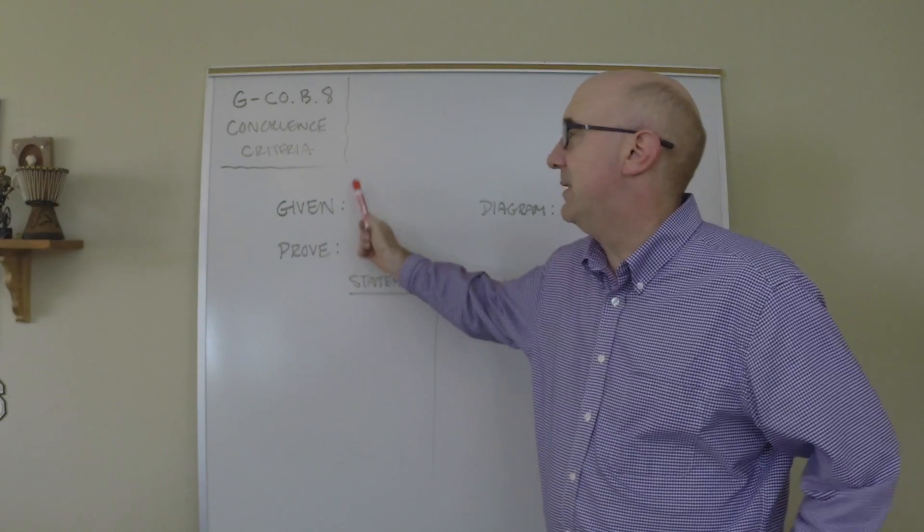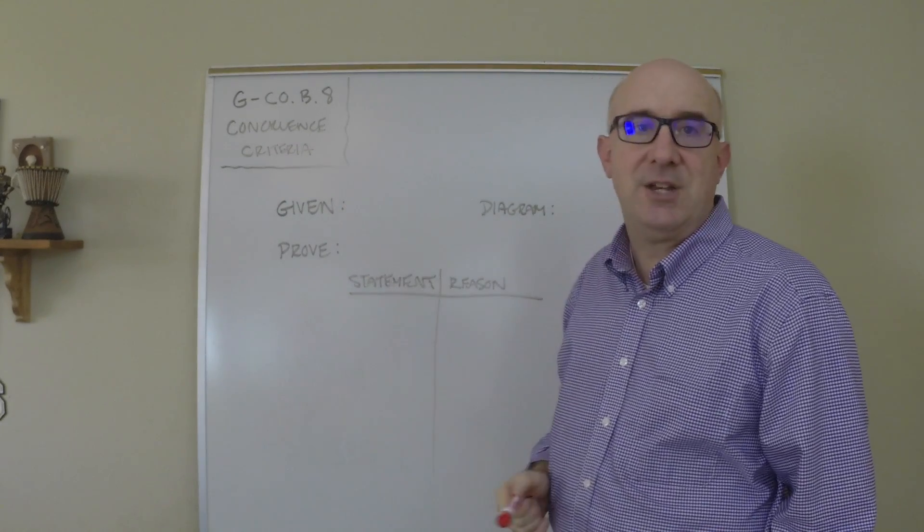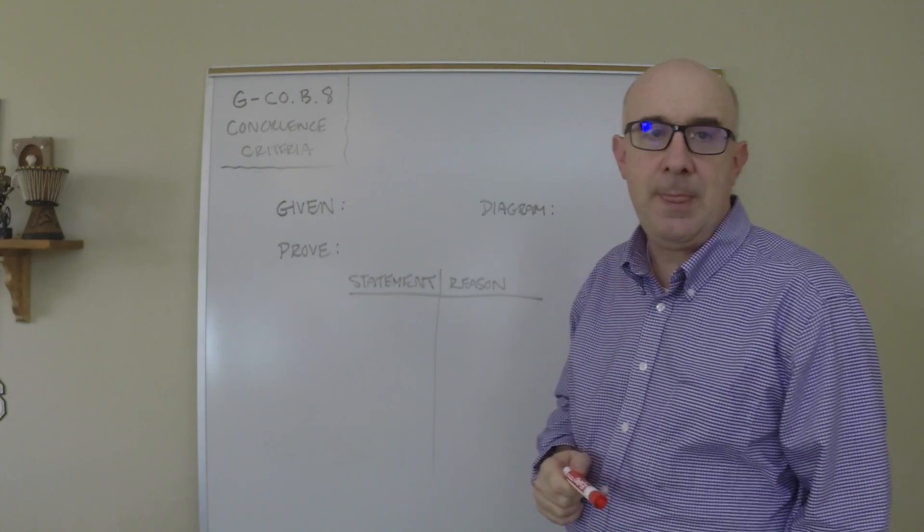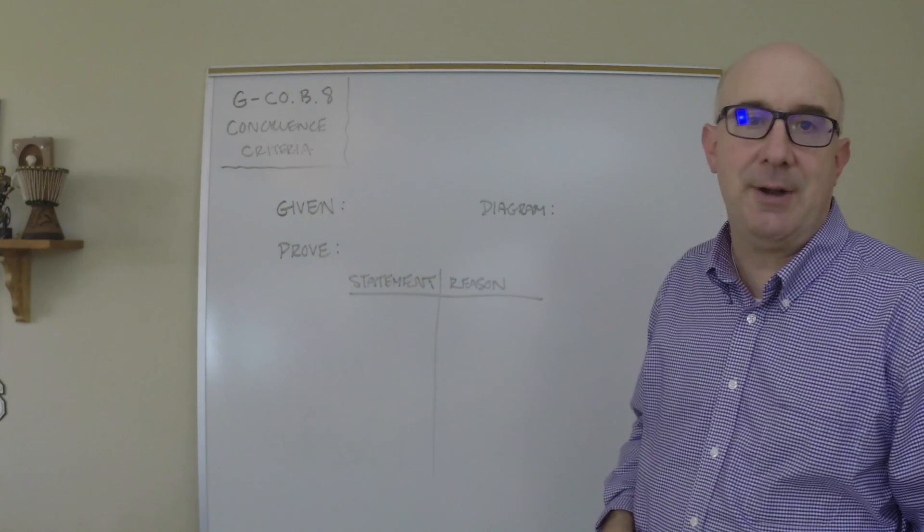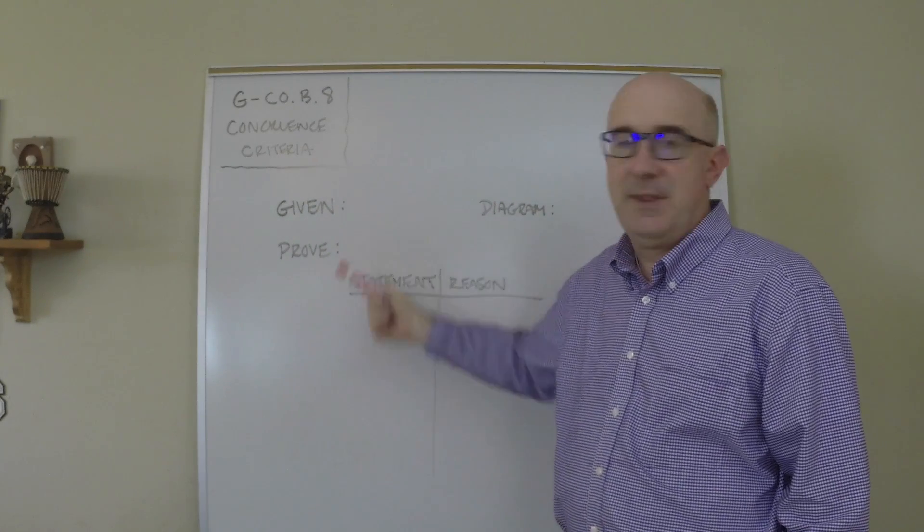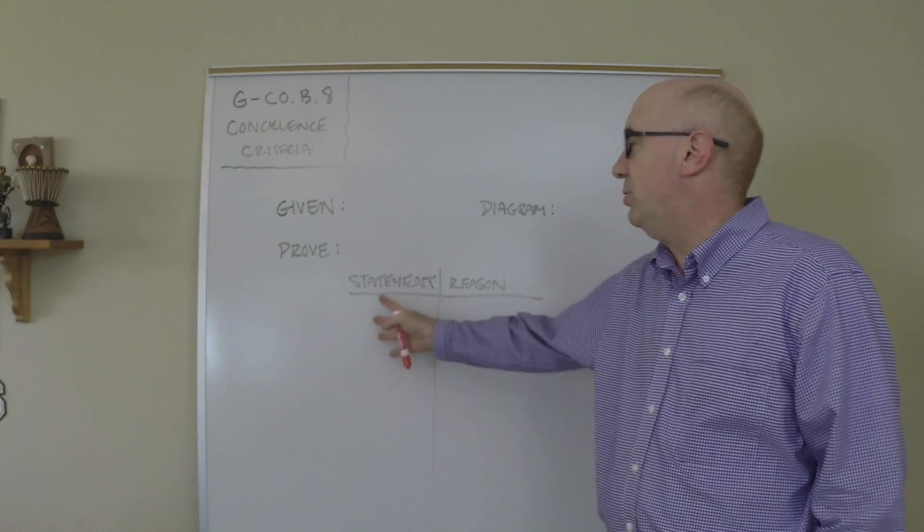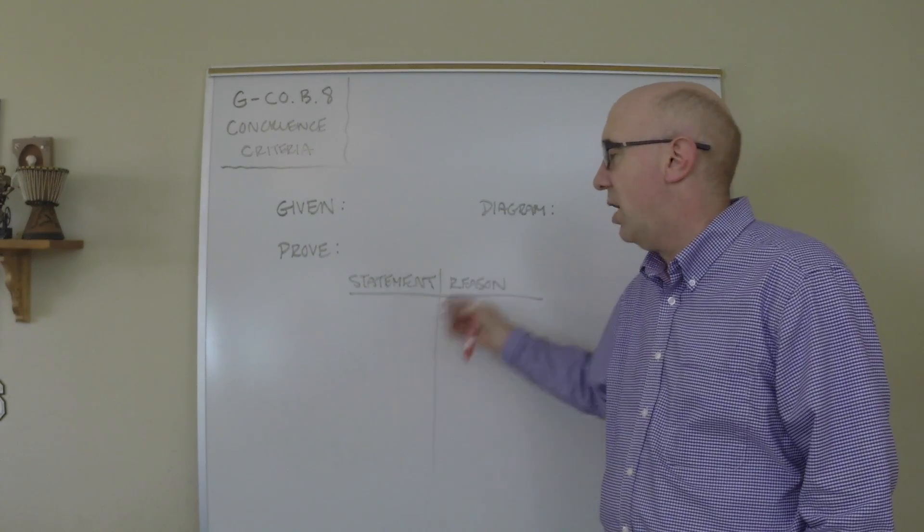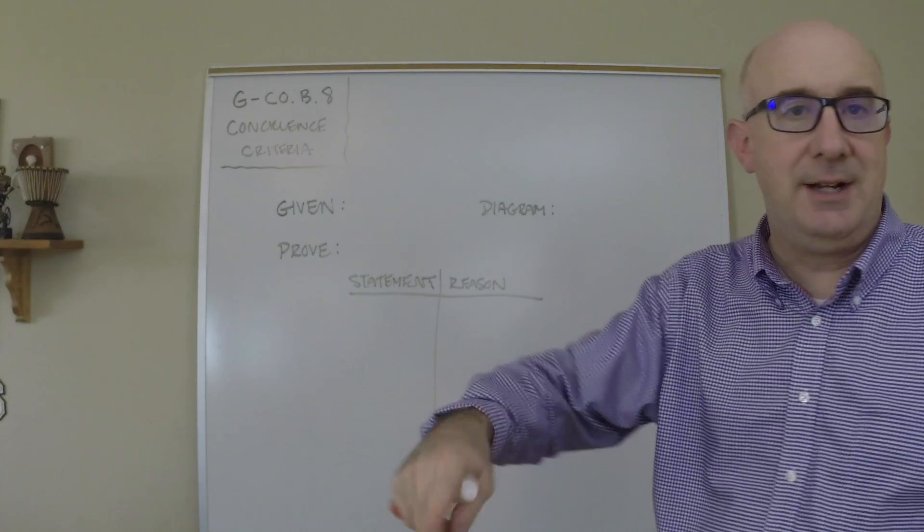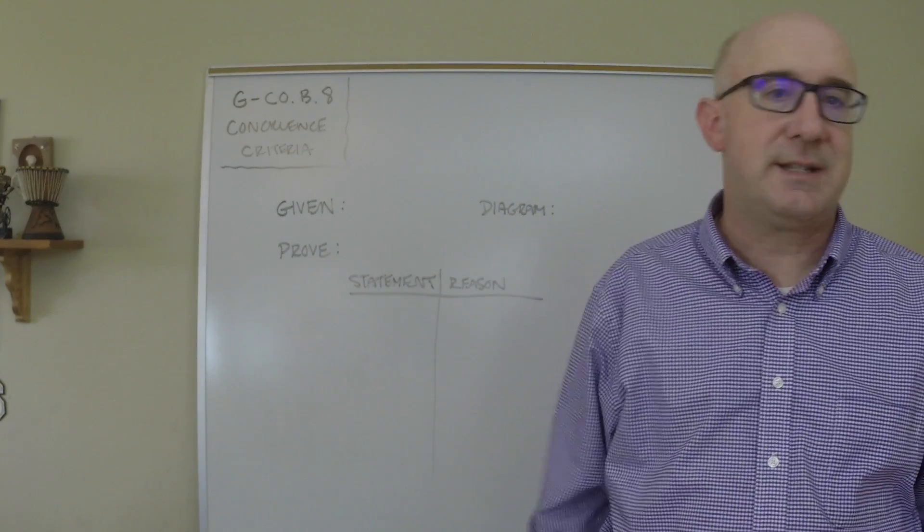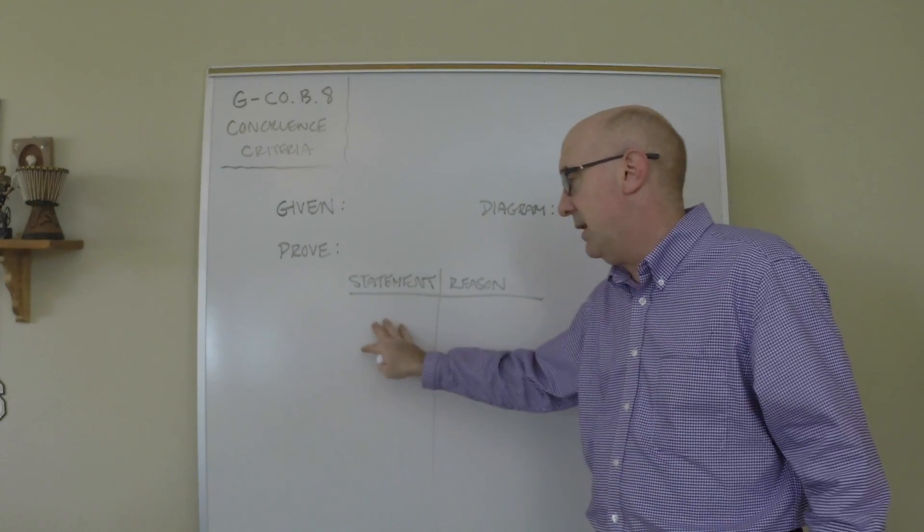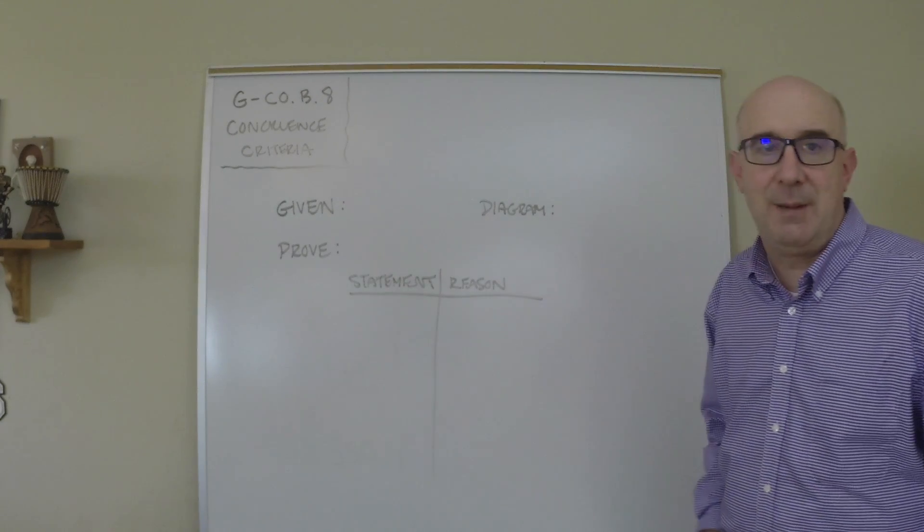The way it usually sets up is they state what you've been given as your starting materials. They tell you what they want you to prove, and then often there's a diagram to help you understand both the given and the thing they want you to prove. The two columns: one side you'll make your statements. So you'll say this angle equals this angle, that side is the same as that side. This is a midpoint of this. You'll make statements.